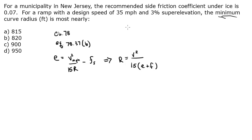Let's look at what we have. We know velocity is 35 miles per hour, superelevation was given as 3% or 0.03, and the friction factor was given as 0.07. So we've got everything we need.